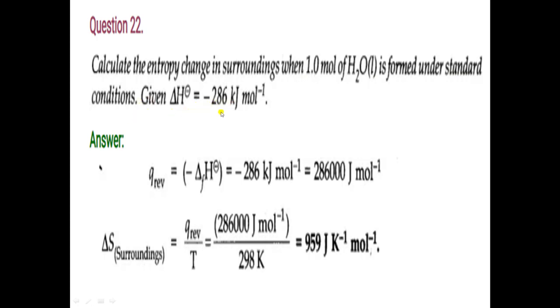Question number 22: calculate the entropy change in the surroundings when one mole of water is formed under standard conditions. ΔH = minus 286 kJ/mol for the system. Formula: ΔS = Q ÷ T. Q = 286 kJ/mol = 286000 J/mol; take positive sign for the surroundings because entropy is increasing there. Temperature is 298 K. Answer: ΔS(surroundings) = 959 J K⁻¹ mol⁻¹.